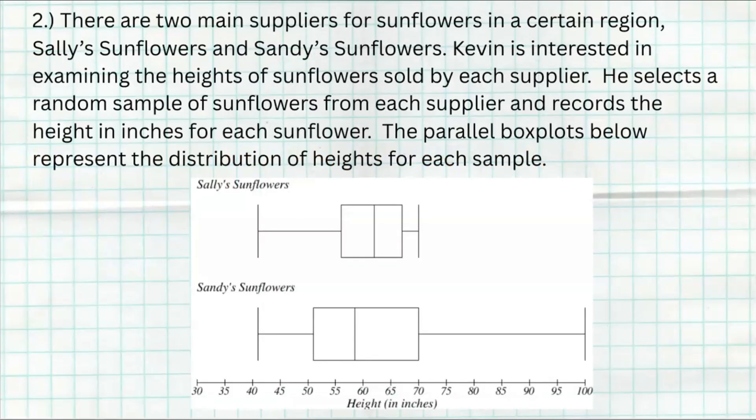The second question of this free response packet deals with box plots. There are two main suppliers for sunflowers in a certain region, Sally's sunflowers and Sandy's sunflowers. Kevin's interested in examining the heights of sunflowers sold by each supplier, so he selects a sample of sunflowers from each supplier and records the height in inches. The parallel box plot below represents the distribution of those heights. It's really important to remember that we don't know how many are in each sample. But when you make a box plot, what you're doing is breaking the data into 25% chunks. So 25% is between the min and Q1, 25% between Q1 and the median, 25% from the median to Q3, and 25%. The same number of sunflowers are in each of those sections. Same thing for Sandy's sunflowers.